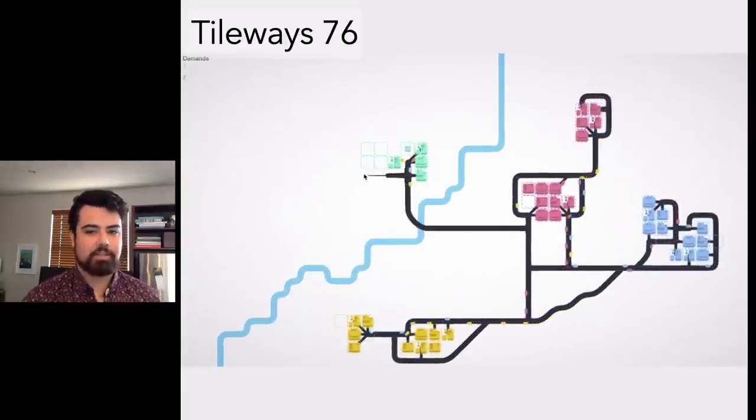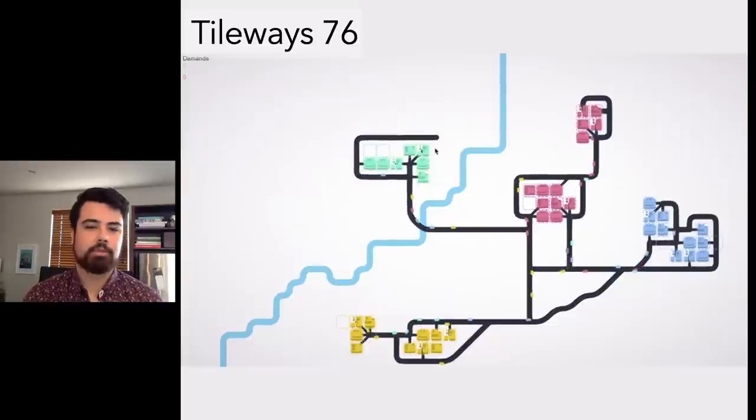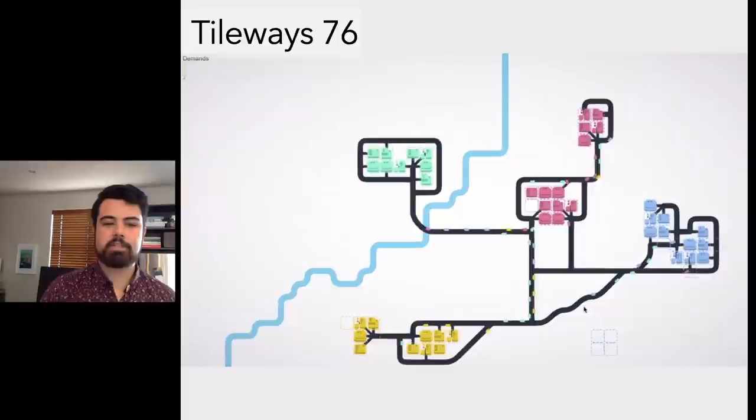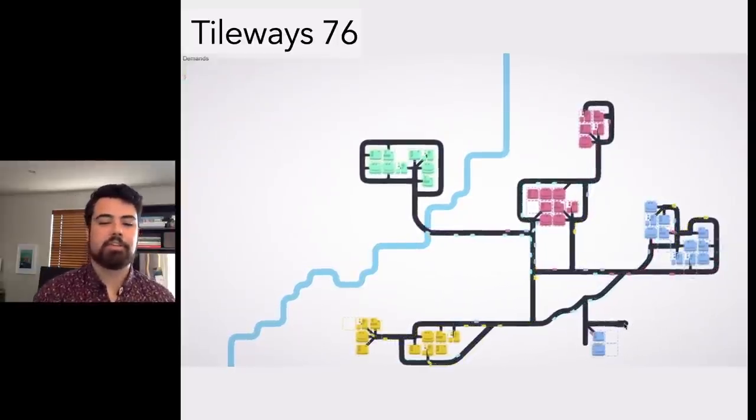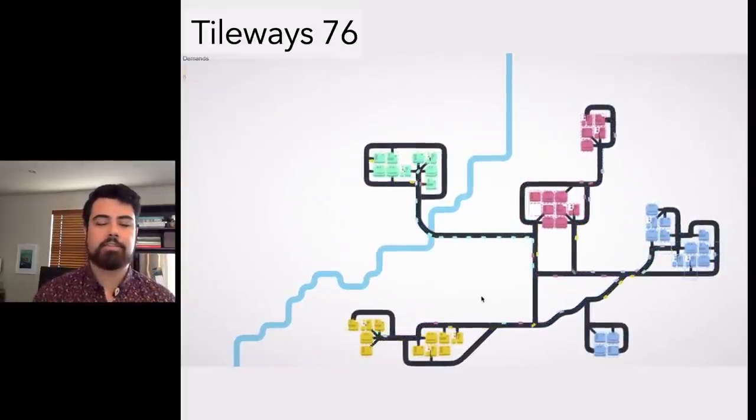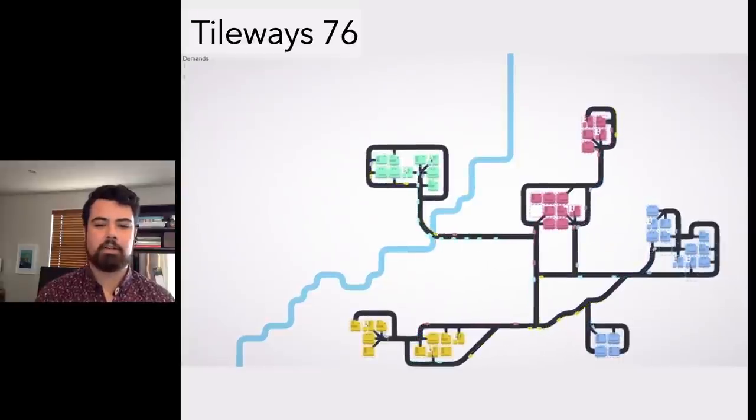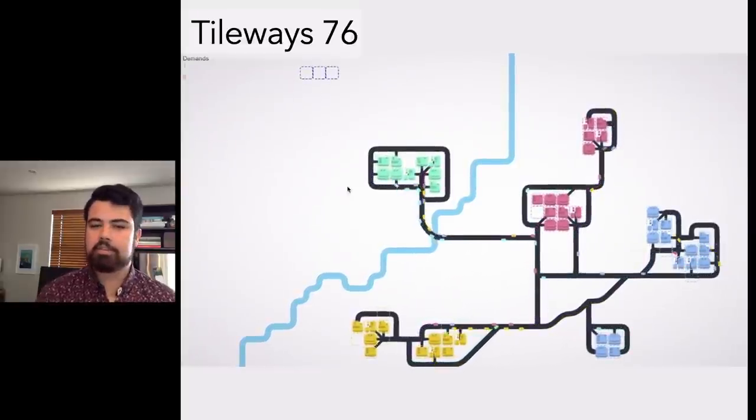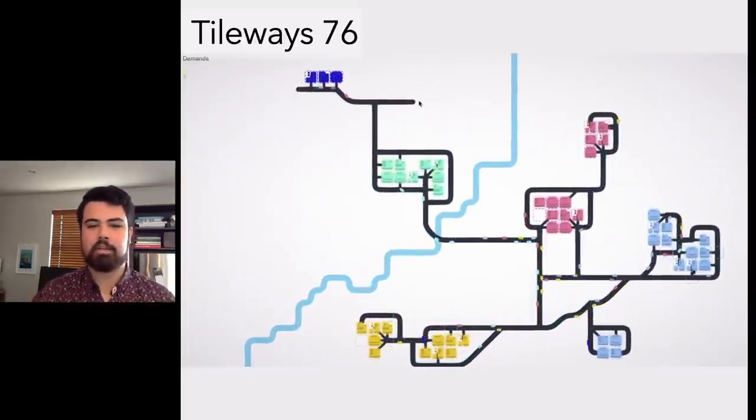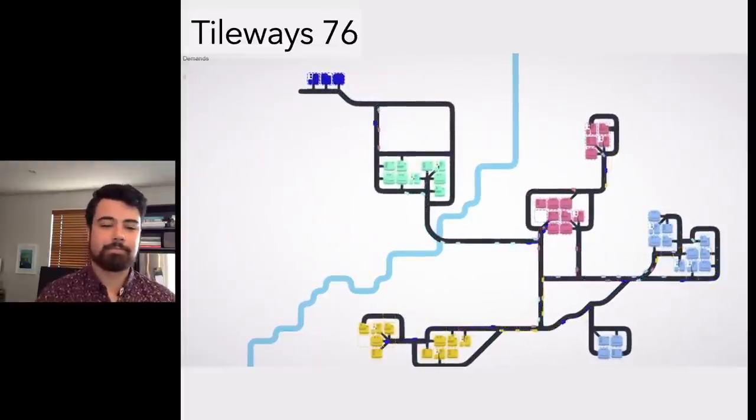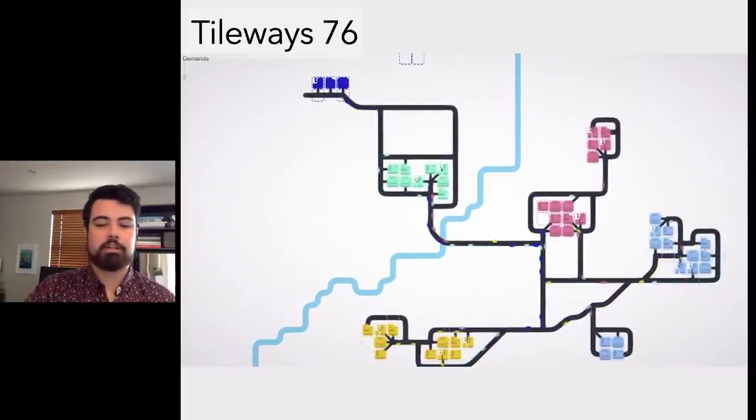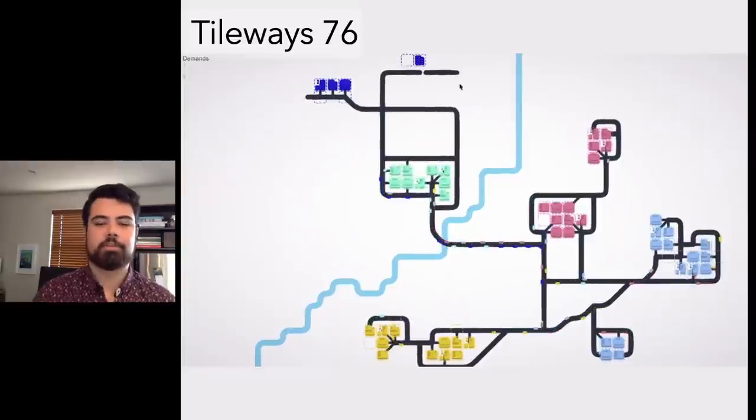Tileways Odyssey was the foundation for the next series of prototypes. This one is called Tileways 76, and it's an interesting variation where instead of buildings spawning by themselves, they'll spawn with a zoned area, and as you draw a road next to it, it will create a house on that road.